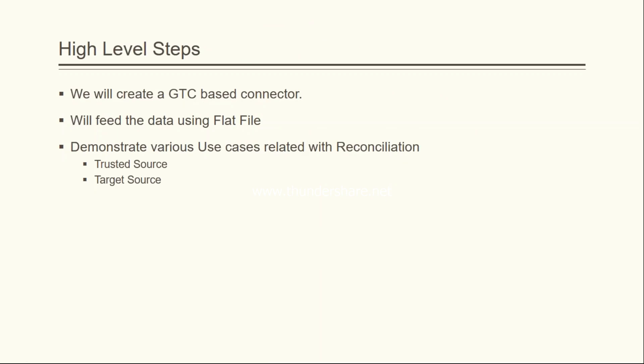What are the high level steps? The HRMS system and OIM are two different types of systems. In order to establish the communication between them, we need to install a connector which is going to act as a third party. We are going to use the GTC — the Generic Technology Connector — and we will feed the data using a flat file, then demonstrate the trusted source and target source reconciliation.